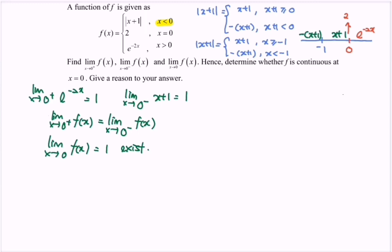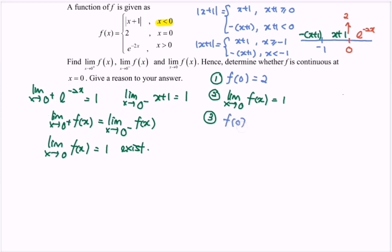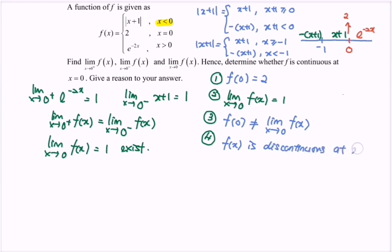Hence, determine whether f is continuous at x equals 0. Step 1: f(0) equals 2. Step 2: The limit when x approaches 0 for f(x) exists, and the value of y approaches 1. Step 3: Is f(0) equal to the limit when x approaches 0 for f(x)? The answer is no — they are not the same. Therefore, step 4: we can say that f(x) is discontinuous at x equals 0.